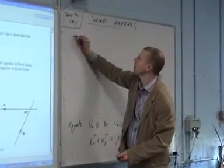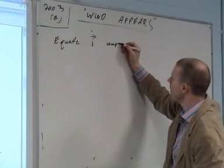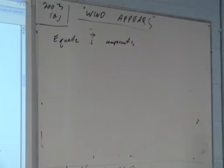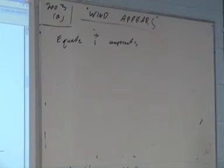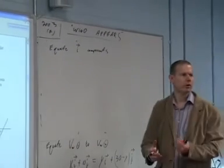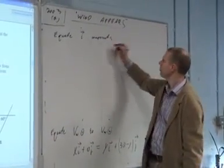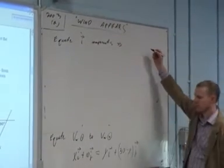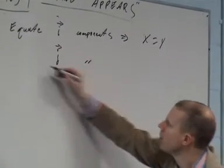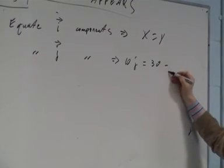So straight away, what do we say? Equate the i components. And you do this in honors maths with what? Where you equate the i's and equate the j's? Complex numbers. In fact, in complex numbers, you talked about real and imaginary numbers. You equate the reals and you equate the imaginaries. So it's something like that here. You equate the x components. What do I get? X equals y. And you equate the j components. 10 equals 30 minus y.